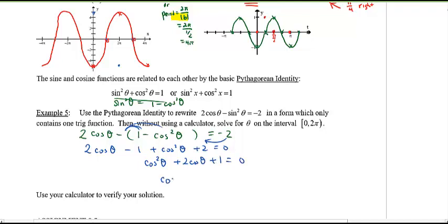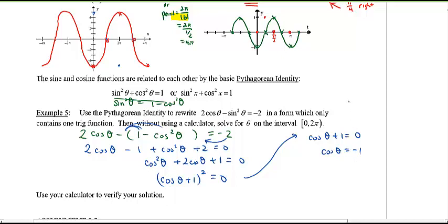After simplifying, we get (cos θ + 1)² = 0, so cos θ + 1 = 0, meaning cos θ = negative 1. Looking at the cosine graph, this occurs at θ = π. You can verify with a calculator by plugging in the answer.